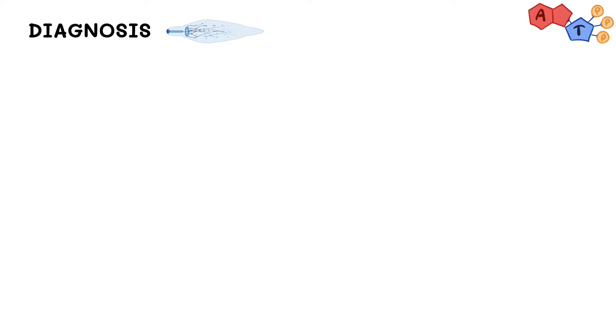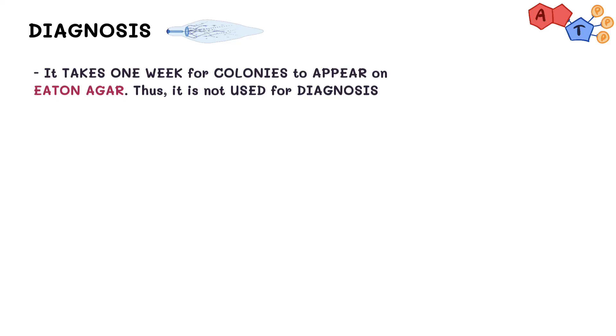However, diagnosis of mycoplasma is usually not made by culturing as it takes at least one week for colonies to appear on special media known as Eaton Agar. Their colony has a characteristic fried egg shape, with a raised center and a thinner outer edge.